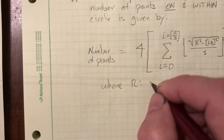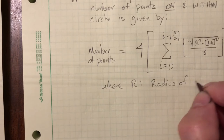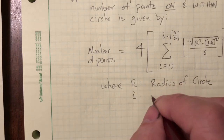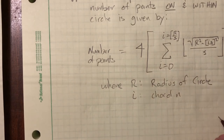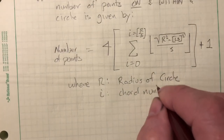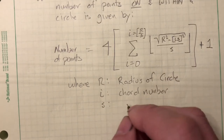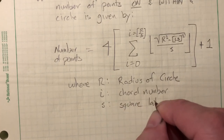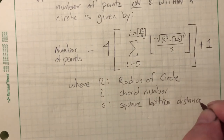Where R equals the radius of the circle, i is the chord number, and S is the lattice spacing distance.